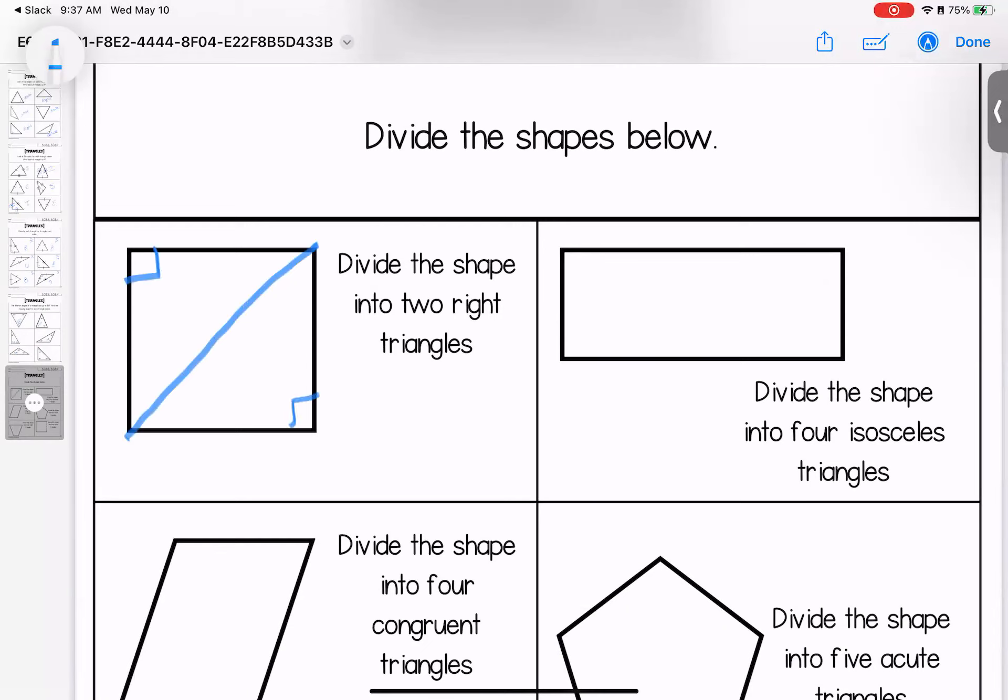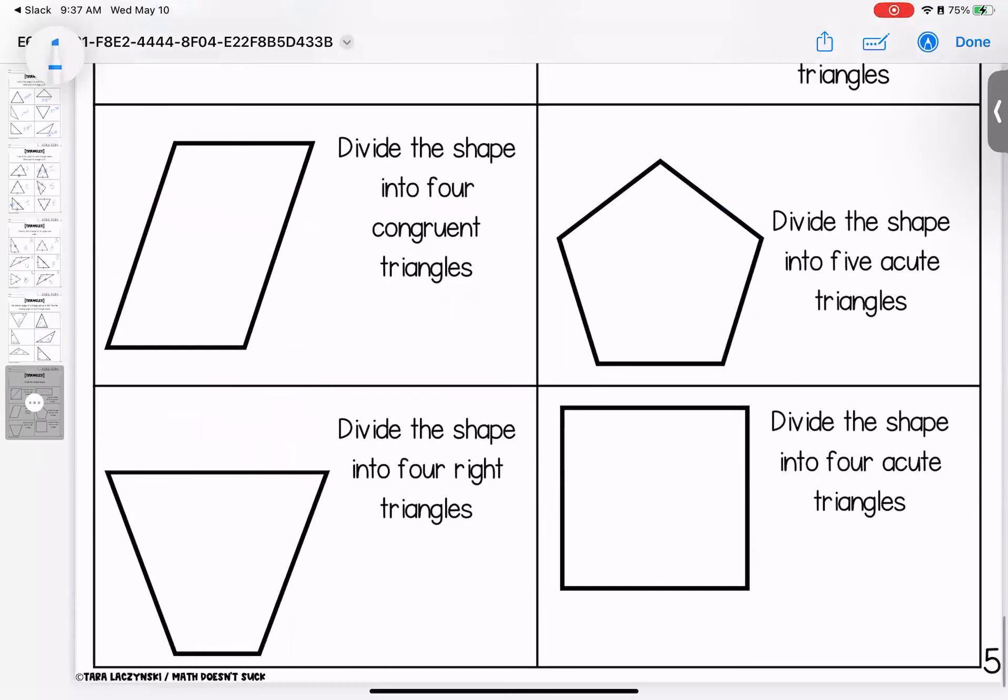Four isosceles triangles. So with this one, just a reminder, isosceles means that two of the sides are the same. So I want four that have matching sides, two sides. So if I did it this way, I can cut it that way. And then I can cut it that way. And that way, then I'm going to have two sides, two sides, two sides, and two sides.